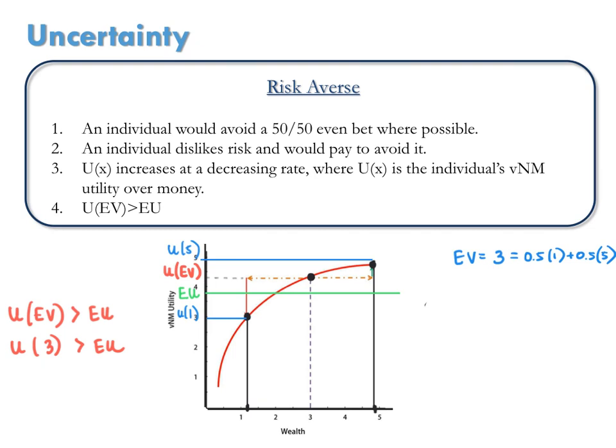You can see this in the figure. Here's how a risk-averse person would feel about getting $1. And here's how she would feel about getting $5. The expected utility, where the weights are 50-50, is right in between these two utility values. And so, what you can see is that knowing that you'll get $3 with certainty gives you more utility than the utility you expect to receive from option 2.